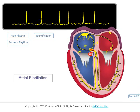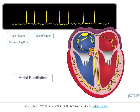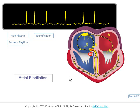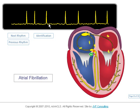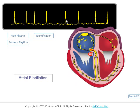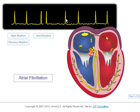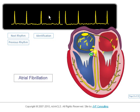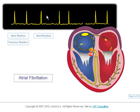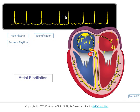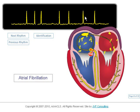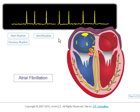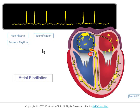In this rhythm, atrial fibrillation, we don't see P waves. The QRS is narrow and the rhythm is irregular — actually the most irregular rhythm there is. The rate is about 80.